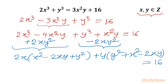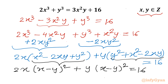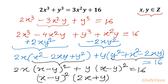You can see in each bracket it is one perfect square — (x − y)². So I will write 2x·(x − y)² plus y·(x − y)² equal to 16. Factoring out (x − y)², we get (x − y)²·(2x + y) equal to 16.